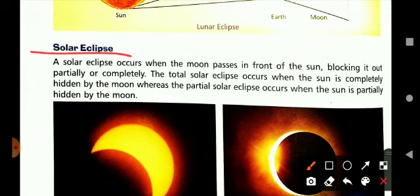Solar eclipse occurs when the moon passes in front of the sun, blocking it out partially or completely. When the moon is in front of the sun and it blocks the rays of the sun passing toward the earth, it is a total solar eclipse.